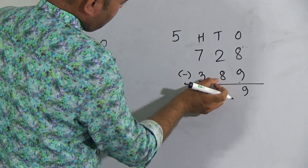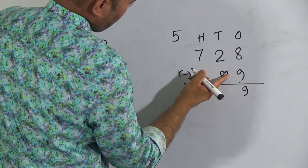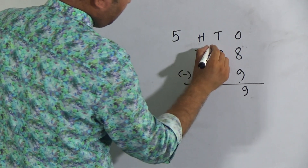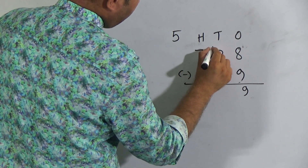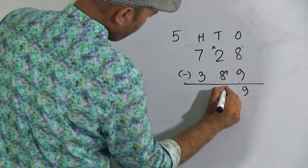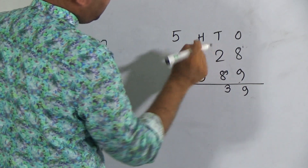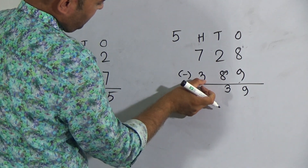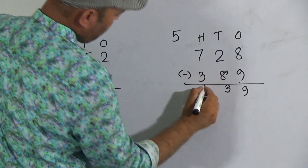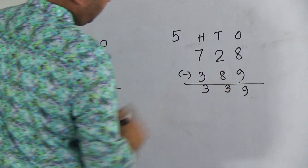That carried one will be added with this eight — eight plus one it will be nine. Now nine from two — two is smaller — so it will be twelve. Nine from twelve it will be three, and we have carry one again. One and three it will be four, four from seven it will be three. My dear students, hope you understood this one.